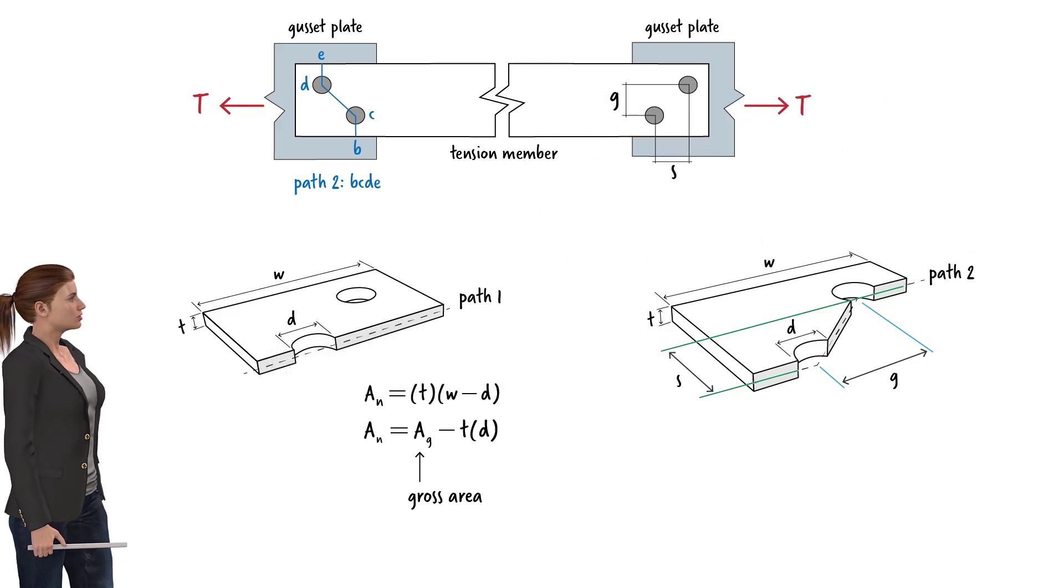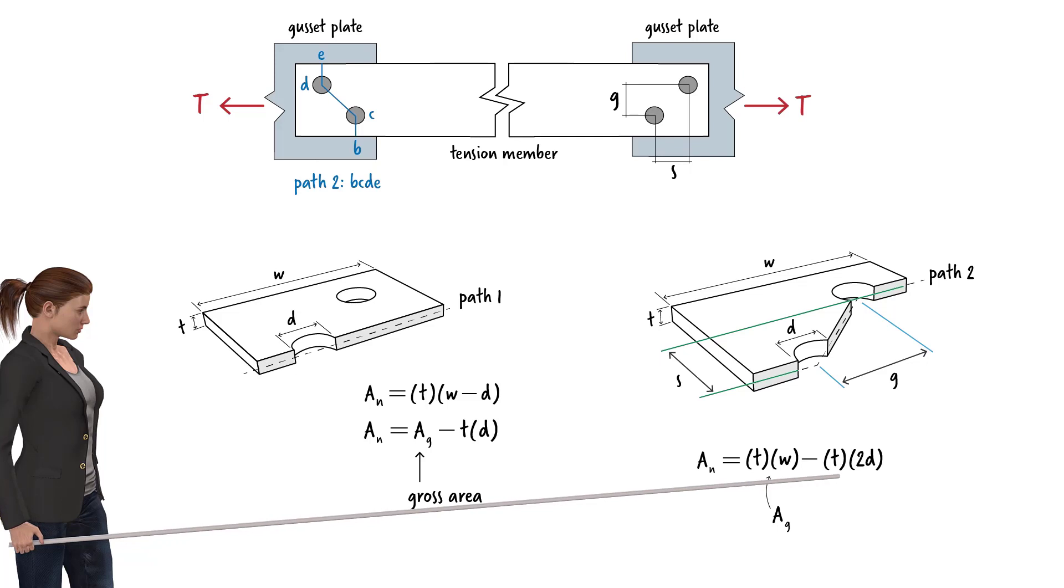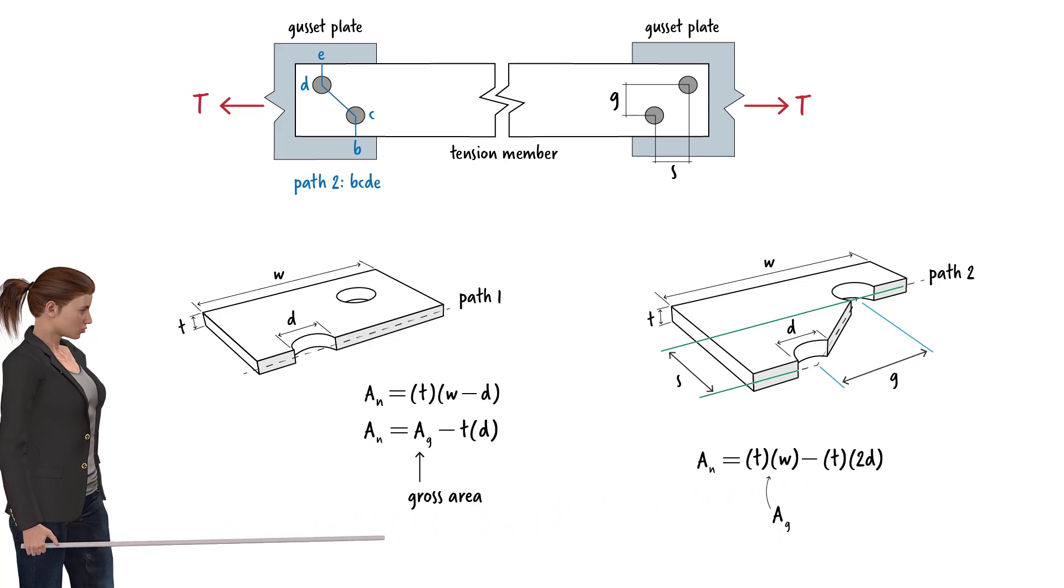The procedure involves two steps. First, we subtract the area due to the holes along the path from the gross area of the cross section. In this case, since there are two holes along the path, we subtract two hole diameters times the thickness of the plate from the gross area. Second, to compensate for the additional area along the inclined line between the two holes, we add the plate's thickness times s squared over 4g to that area.